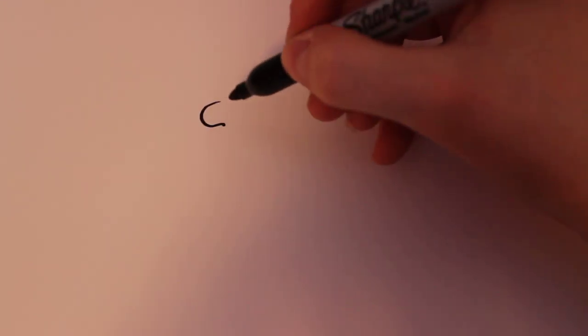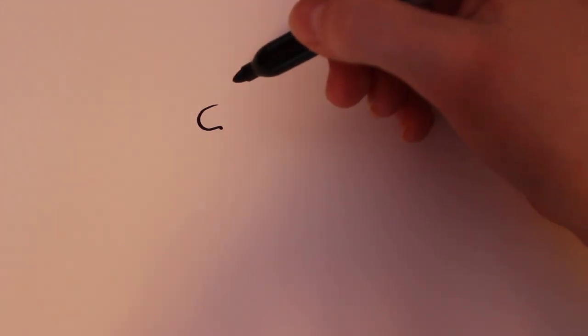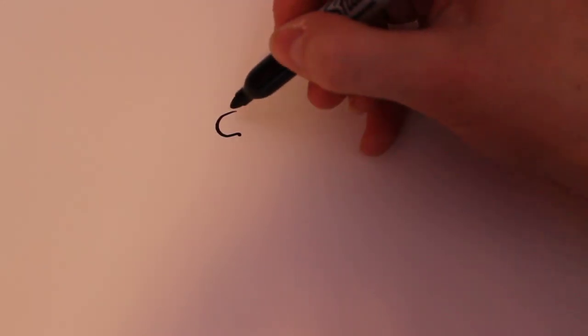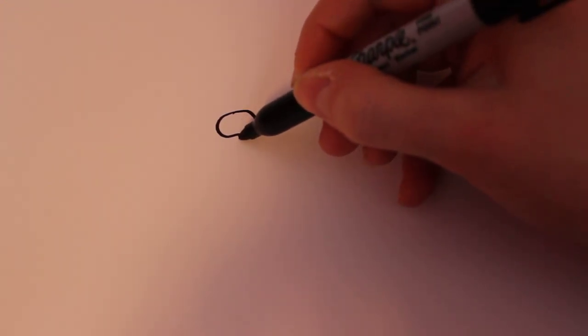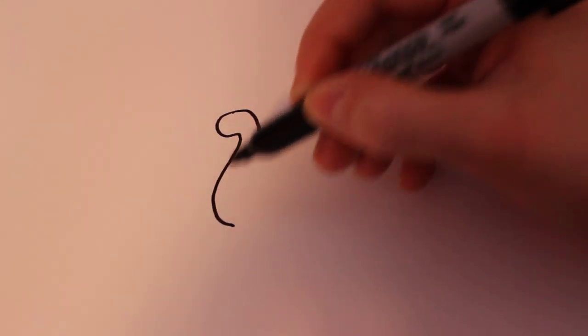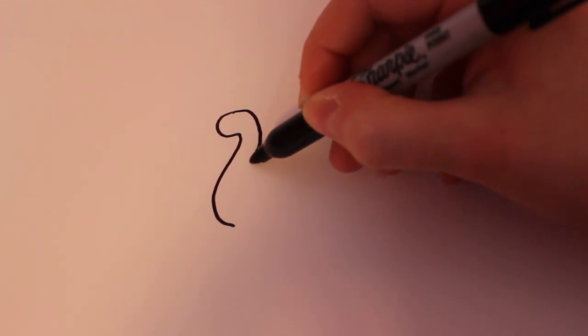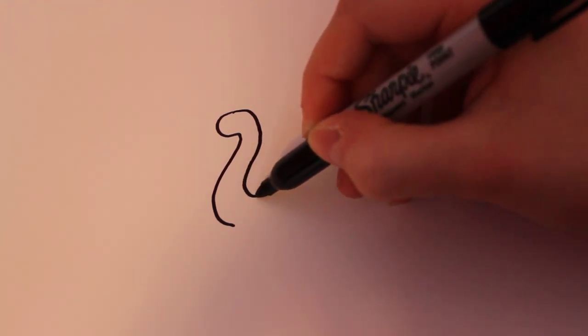First we start off by drawing his face, which is just going to be kind of like the Loch Ness Monster's face. It's just going to be like that type of shape. And then you're going to want to go right down into a neck, which are just curved lines like that.